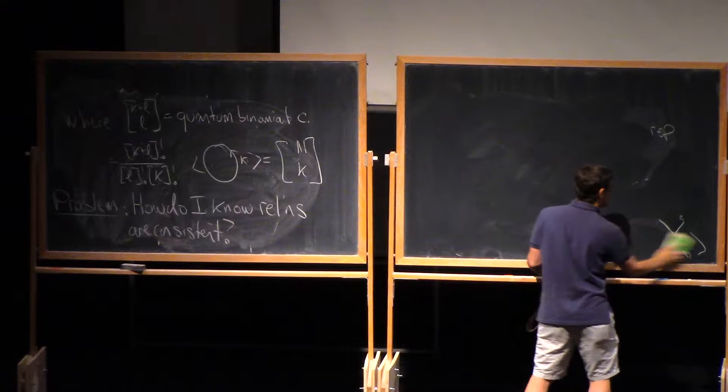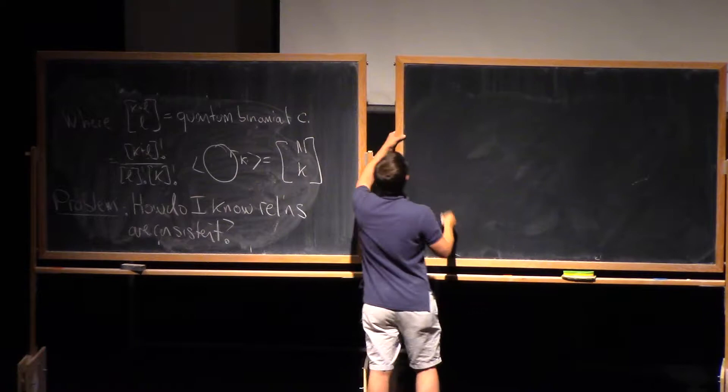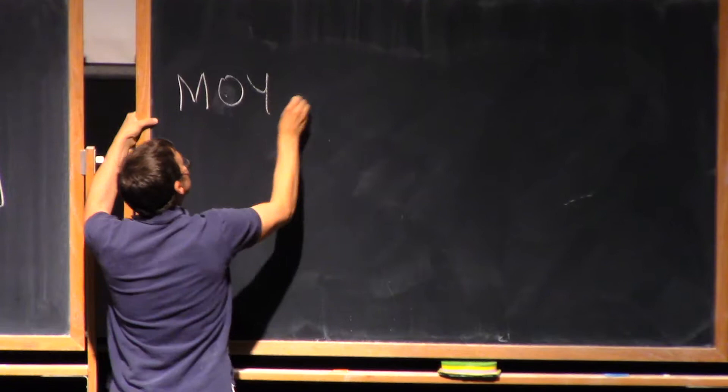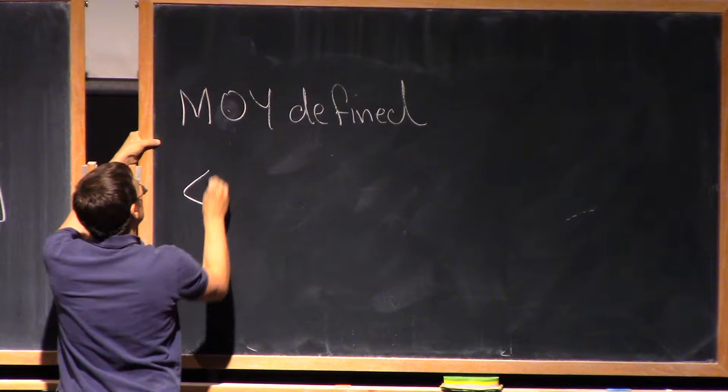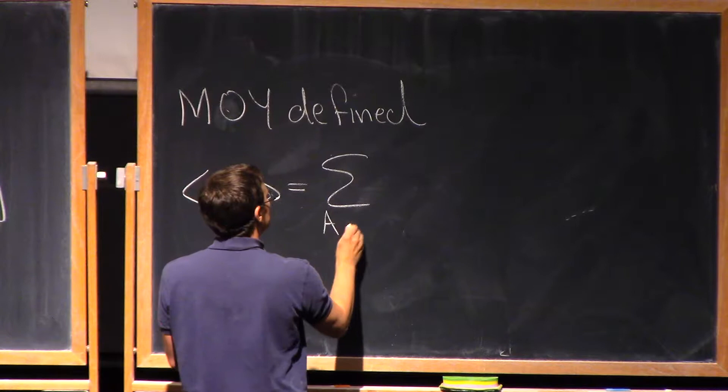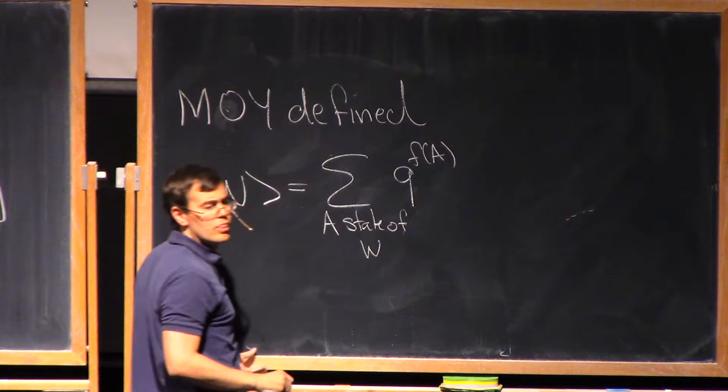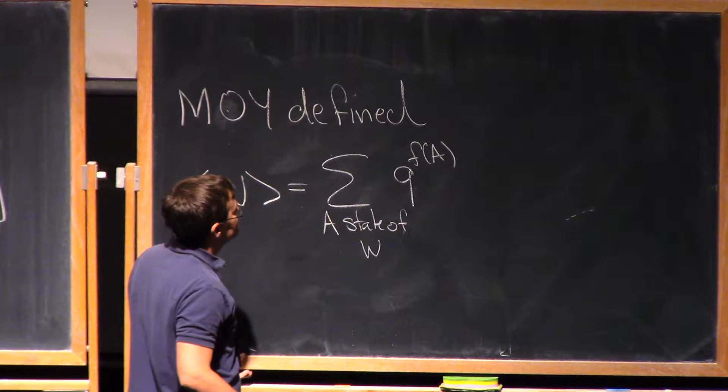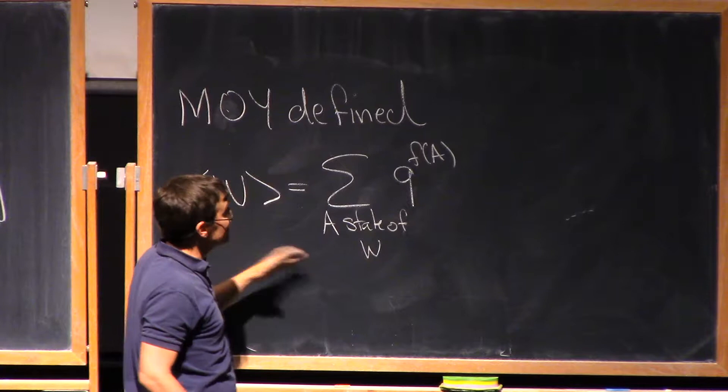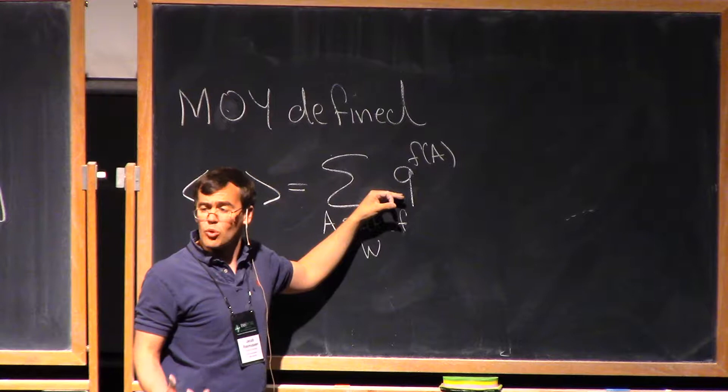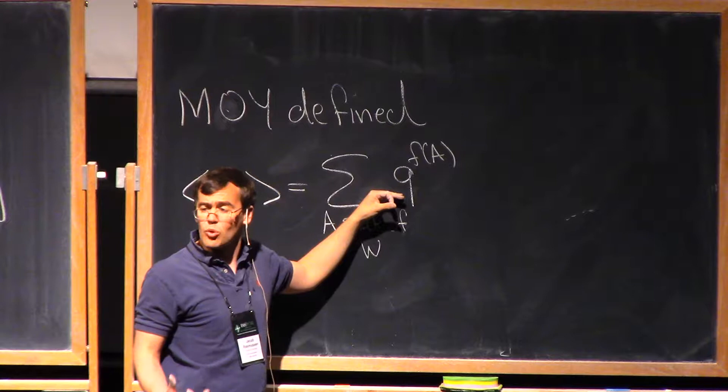Well, Murakami Atsuki and Yamada solved this problem in the following way. What they actually did to find bracket of my web is I'm going to say it's a sum over A which is a state of W, q to the let me say f of A. And now this expression makes some things very clear. So one thing is that this is going to be a polynomial of positive coefficients which looks really promising for categorification. Now I should explain a little bit about what the states are. I'm not going to tell you exactly what this function is. You can read their paper which is very nice.